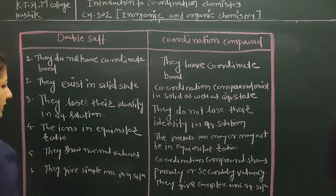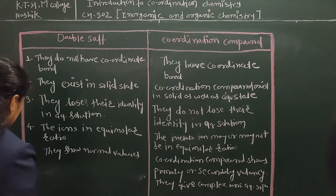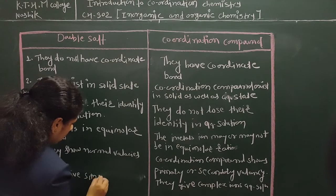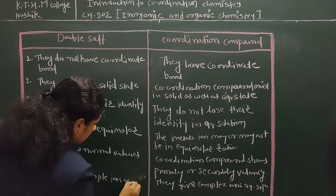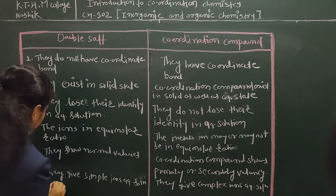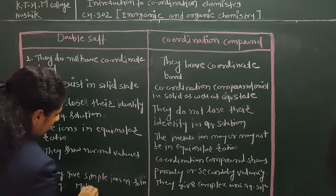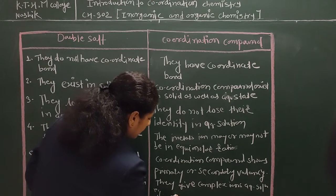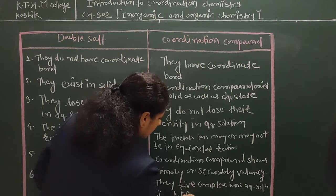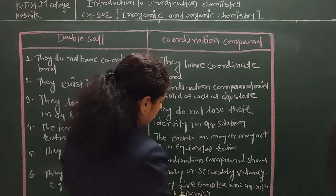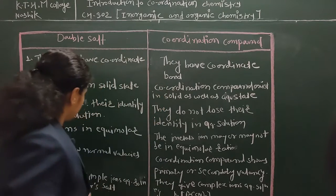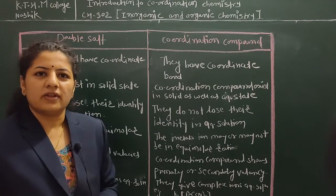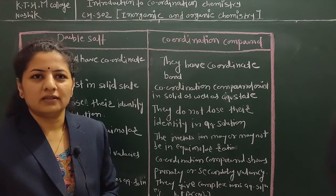The example of a double salt is Mohr's salt, as we recently discussed, and the example of a coordination compound is the hexacyanoferrate complex. These are the examples and the differences between double salts and coordination compounds. In the next lecture, we are going to discuss Werner's work and theory. Thank you.